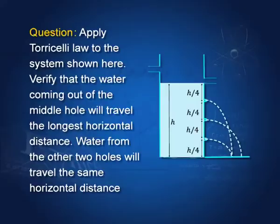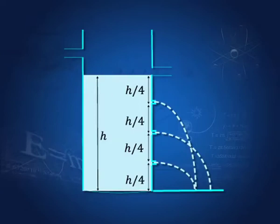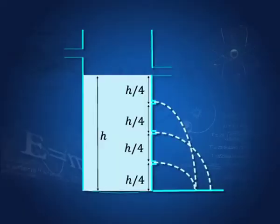Let us calculate what the distance covered by a stream coming out of say this hole or this hole or this hole. What is the horizontal distance that the fluid travels? Remember that we are considering the level of the bottom of this vessel at that level. This is at a depth of h by 4. This is at a depth of h by 2. This is at a depth of 3h by 4. So we have three holes. Let us label them 1, 2, and 3. One at a depth of h by 4, two at a depth of h by 2, three at a depth of 3h by 4.